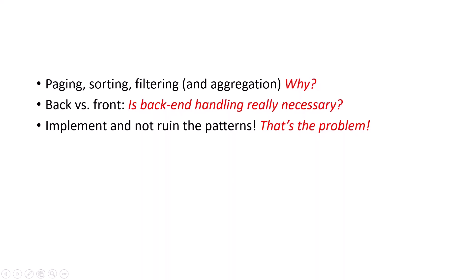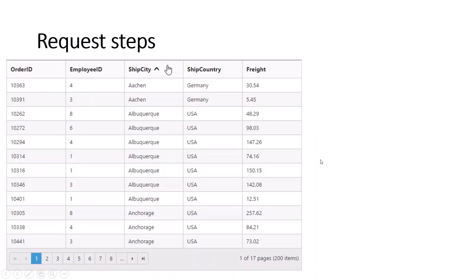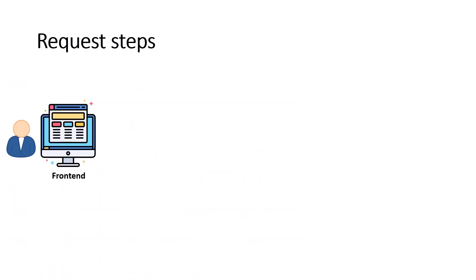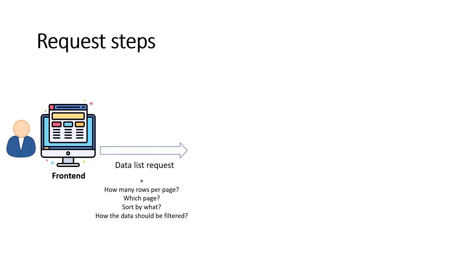Let's take a brief look at the round trip. The paged, sorted, and filtered — or maybe aggregated — data list request from the front end: at the first step, the user requests one page of a list of records. This is done by interacting with a client-side data grid, as shown here on a web page in a browser. The request from the client side, with whatever library, framework, or components, will have a set of metadata. The format is completely based on the used technology, but the content is similar — it would contain things like how many rows per page, which page you need, sorted by what, and how the data should be filtered.